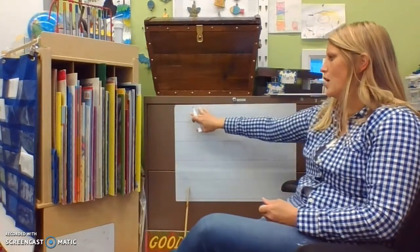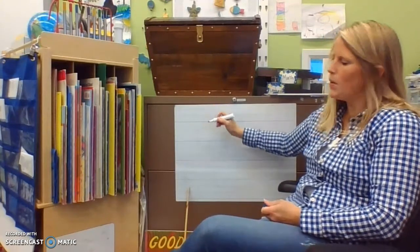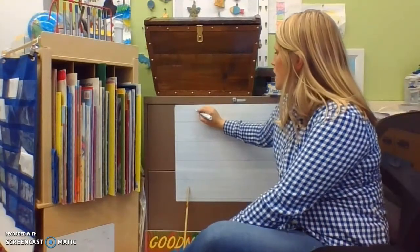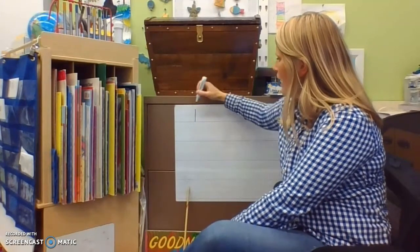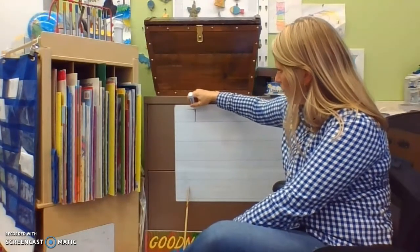So again, we start at the top of our line. We always start at the top. We go top to bottom, left to right. So for my capital T, a straight line down. I helicopter up to the top and I do a line across.